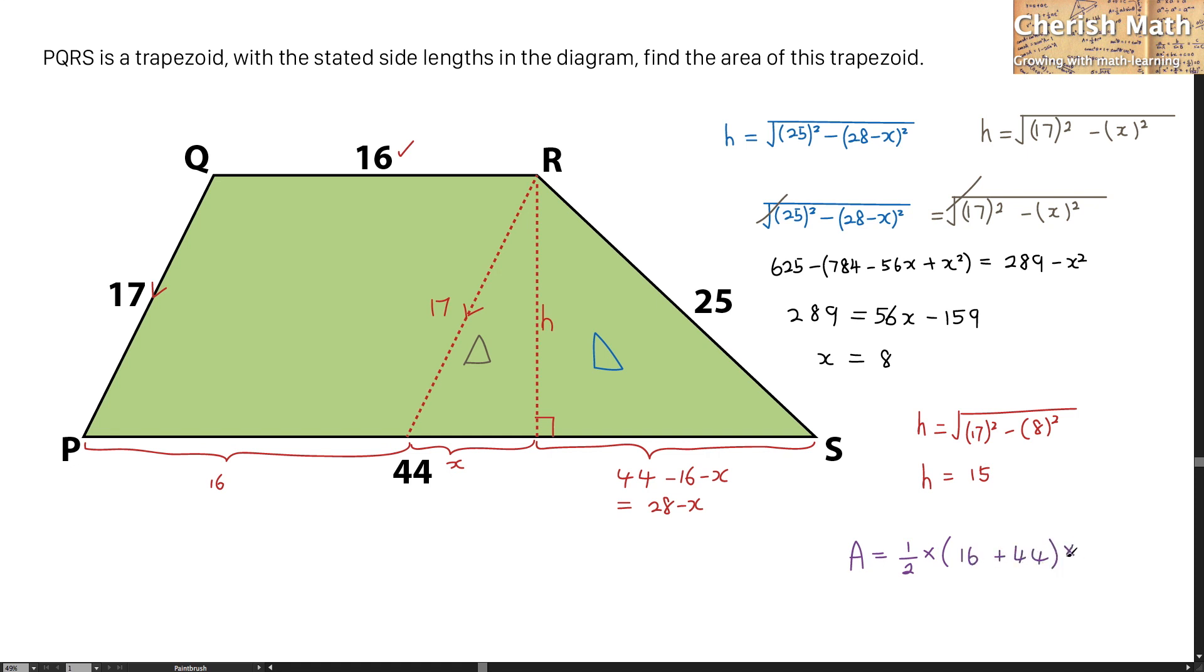And multiplied by the height here that I obtained from this line which is at 15. And the answer that I'm getting here is going to be 450 units squared.